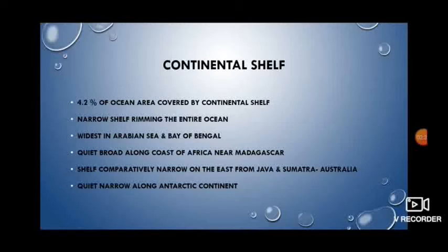The continental shelf is comparatively narrow on the east, from Java and Sumatra in the north to Australia in the south, where the average width is only 160 kilometers. It is also quite narrow along the Antarctic continent.